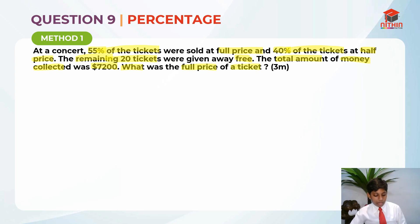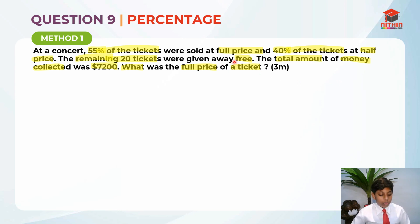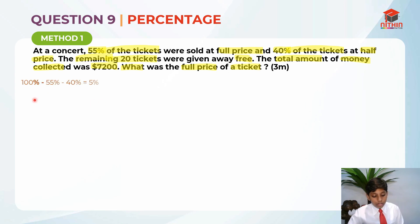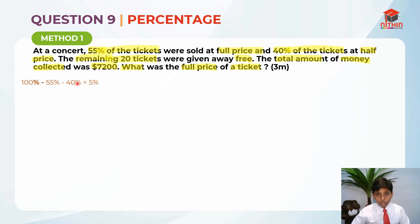What is the full price of one ticket? That's what they're asking us. Now we just need to find what percentage is free. Since we know the percentage for full price and half price tickets are 55% and 40% respectively, we find: 100% minus 55% minus 40% equals 5%. So 5% is given away free.